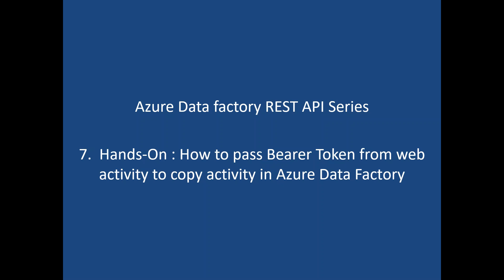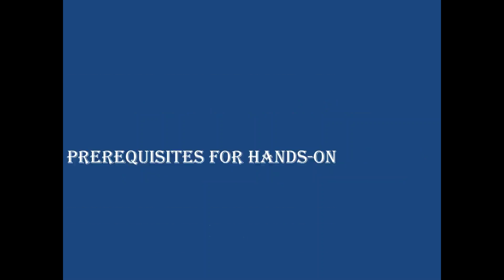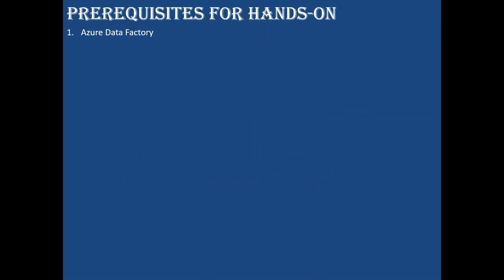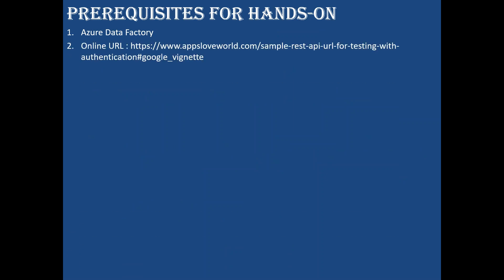In this session the prerequisite is: I'll be using Azure Data Factory to copy data from a REST API to ADLS Gen2. The source is an online URL — within it you will find the URL used for login and the URL used for accessing the user data. The third step is we will be creating the Data Lake Storage Gen2 for storing our target data.